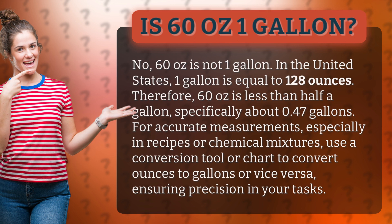Therefore, 60 ounces is less than half a gallon — specifically about 0.47 gallons. For accurate measurements, especially in recipes or chemical mixtures, use a conversion tool or chart to convert ounces to gallons, or vice versa, ensuring precision in your tasks.